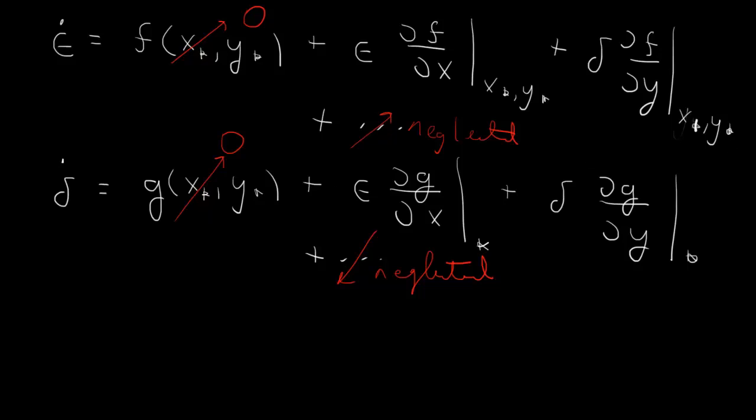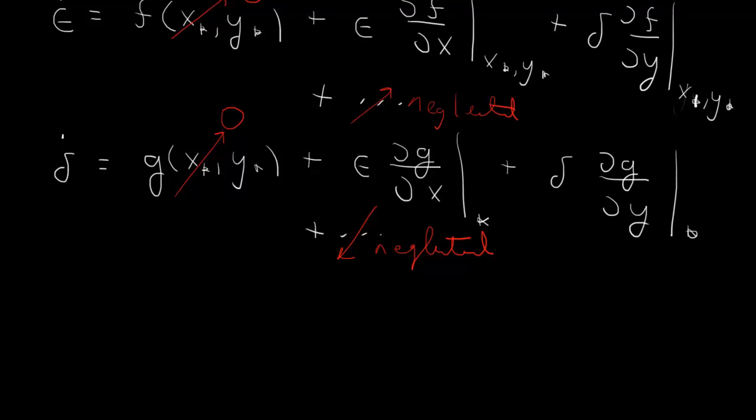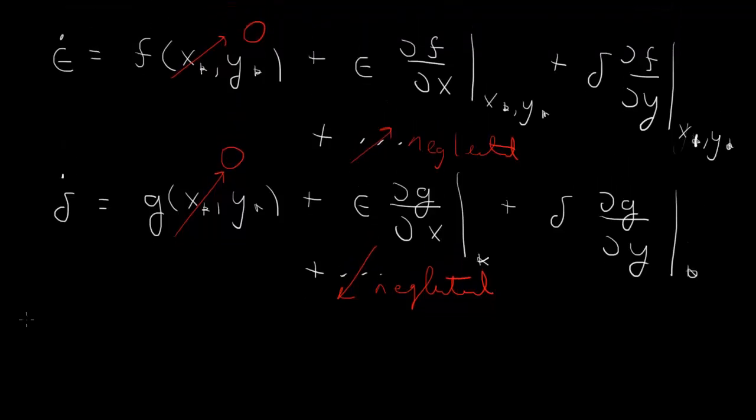So what do we have here? We have d/dt of epsilon, delta, and we have a matrix. This one multiplies epsilon, multiplies delta. So the derivative of f with respect to x, partial of f with respect to x, partial of f with respect to y.